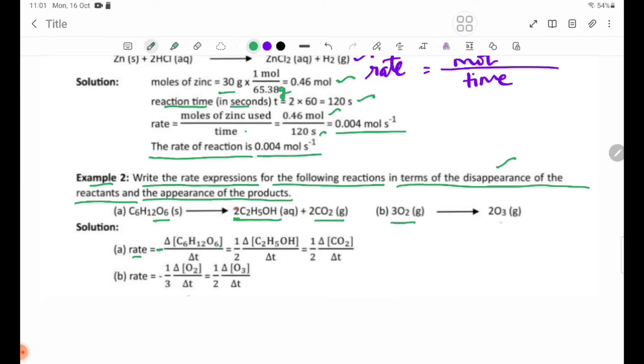For part (b) 3O2(g) → 2O3(g): rate = -1/3 × Δ[O2]/Δt = 1/2 × Δ[O3]/Δt.